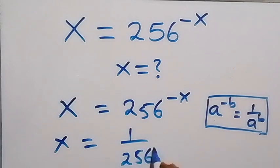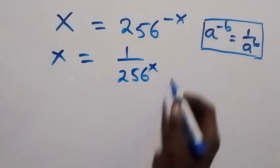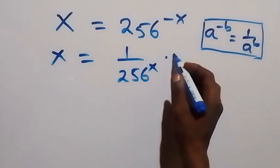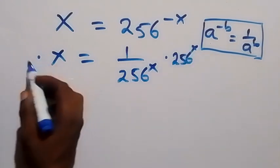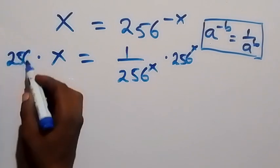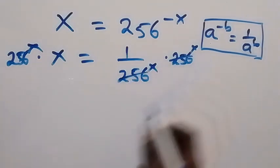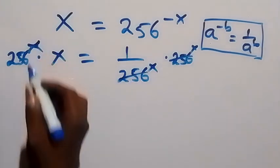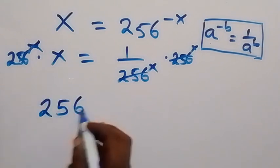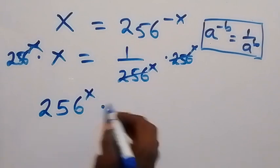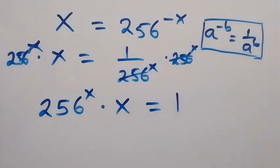In the next step, let's multiply both sides by 256 raised to the power of x. On the right-hand side, multiplying by 256^x cancels the denominator, and we are left with 256 raised to the power of x, times x.